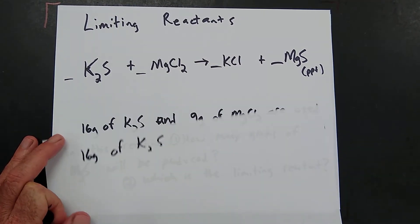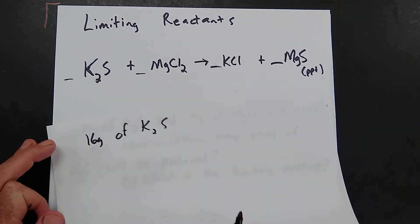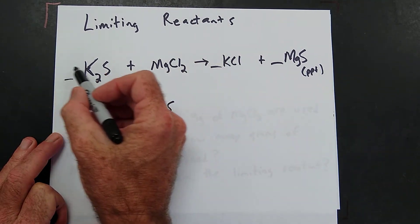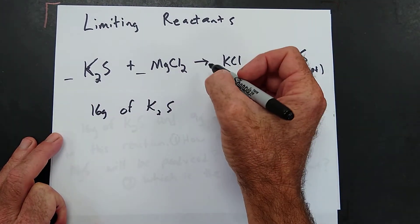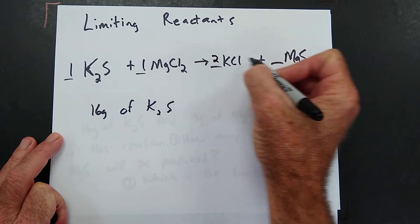So we have to work the problem twice. We're going to work it the first time with the 16 grams of potassium sulfide. First we have to balance the equation and that's going to give us a 1, 1, 2, 1.